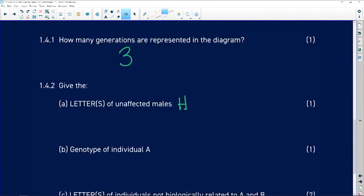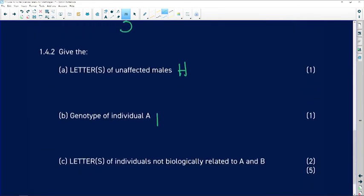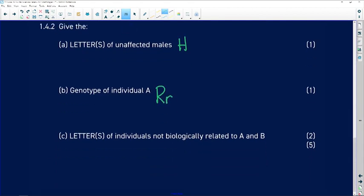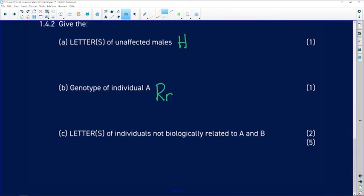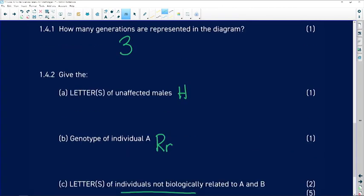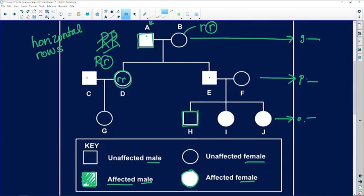Give the letters of not biologically related individuals to A and B. So here's A and B and they have children.